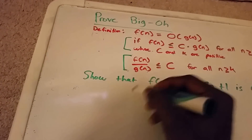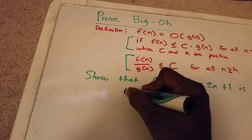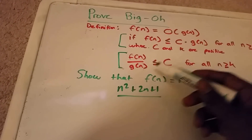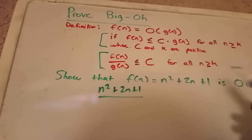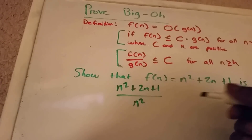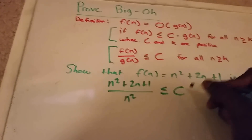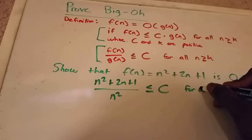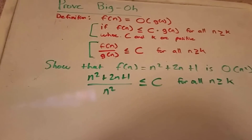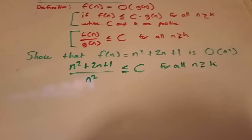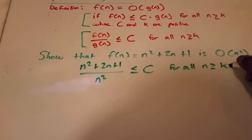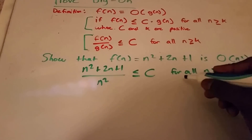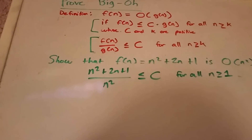So rewriting this with what we have, we get n squared plus 2n plus 1 divided by g of n, which is n squared. And we want to prove that it is less than or equal to some constant for all n greater than or equal to some constant k. So let's choose k to equal 1, so now this holds for all n greater than or equal to 1.